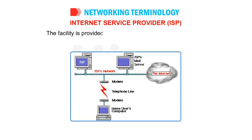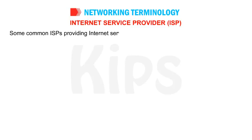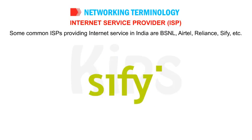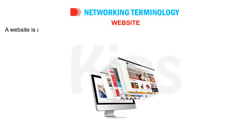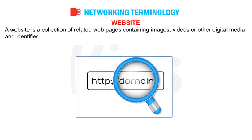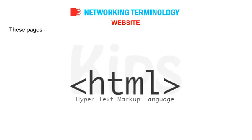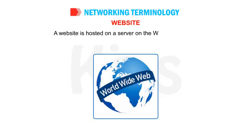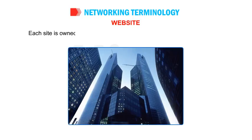Internet Service Provider (ISP): These are organizations that provide internet connection to users in exchange for a fee. Some common ISPs providing internet service in India are BSNL, Airtel, Reliance, SIFI, etc. Website: A website is a collection of related web pages containing images, videos or other digital media, identified with the same domain name. These pages are written in Hypertext Markup Language (HTML) and can be accessed via the internet. A website is hosted on a server on the World Wide Web and is owned and managed by an individual, company or organization.